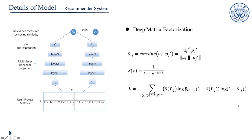Second, we take Y as input to the deep matrix factorization. We use two neural networks to transform the vectors of users and projects and map them to a common low-dimensional vector space respectively. In this way, we can explore the relationship between users and items and learn the potential behavior preference of users in this latent space and get the latent representation. Finally, score prediction is made through cosine similarity.